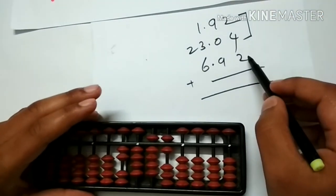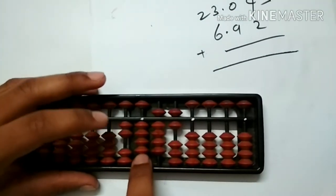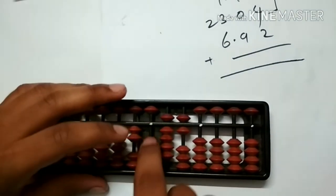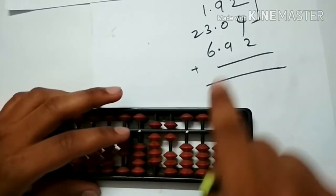Now to add 6.92, so 6 is on the units rod. On the units rod, take big friends addition: less the friend 6, add 10 and add 9.92, 0.9.